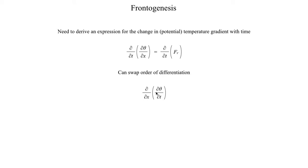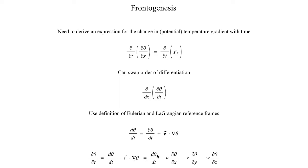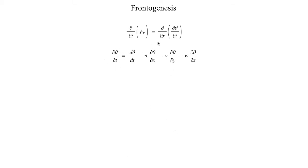Now, remembering back to lecture 1 and the definition of Eulerian and Lagrangian reference frames, the total derivative of some physical quantity with time equals the local derivative plus advection. If we rearrange and solve for the Eulerian partial derivative — which is what we're trying to substitute in — we get: ∂θ/∂t = dθ/dt minus the advection term, which equals dθ/dt minus u·∂θ/∂x minus v·∂θ/∂y minus w·∂θ/∂z. We then plug this dθ/dt into the frontogenesis equation to get the expanded expression.